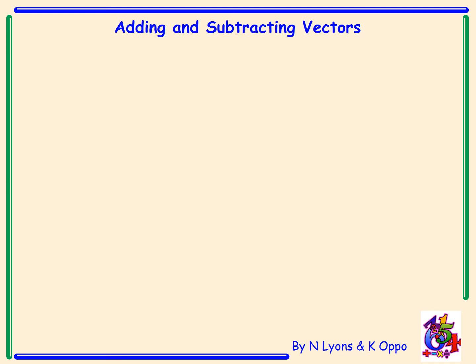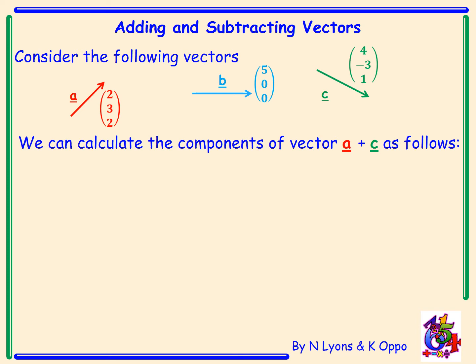Adding and subtracting vectors by looking at components. Here we have vectors a, b and c. We can calculate the components of vector a plus c as follows: Vector a is 2, 3, 2, and we are going to add on vector c which is 4, minus 3, 1. Combining these together: 2 plus 4 is 6, 3 add on negative 3 is 0, and 2 plus 1 is 3, given as a resultant vector of 6, 0, 3.